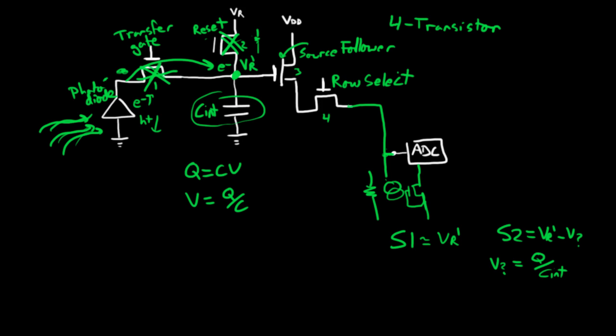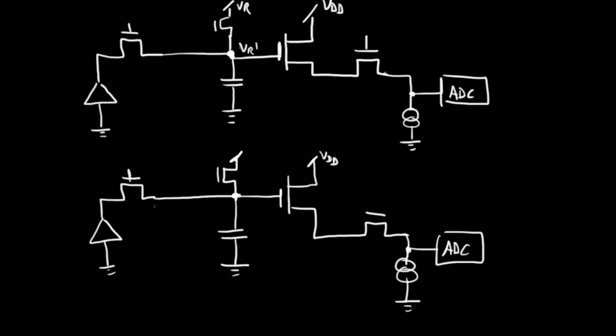I'm going to scroll down and redraw the circuit, and walk you through those two samples, sample one and sample two, in a little more detail. I've drawn two circuits, two 4T circuits. I'm going to use them to represent two states of the pixel circuitry, and they're both identical starting out.